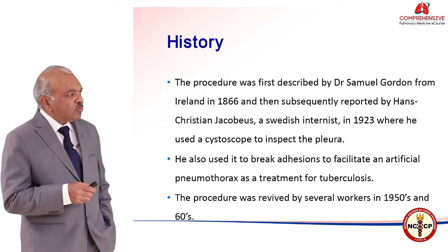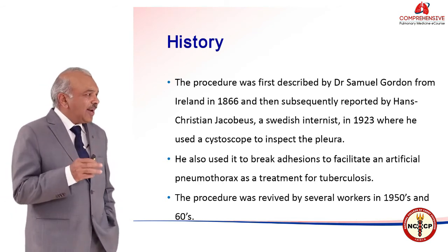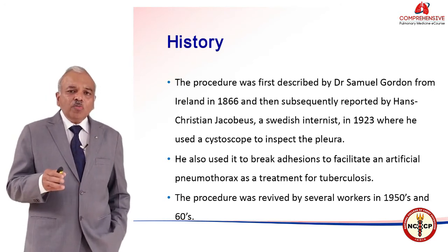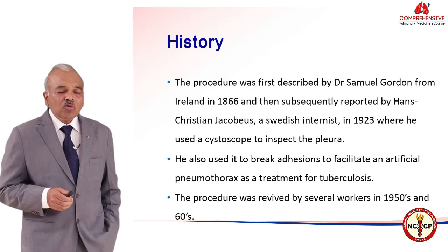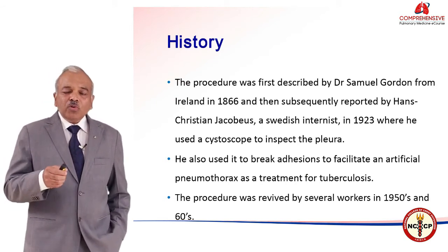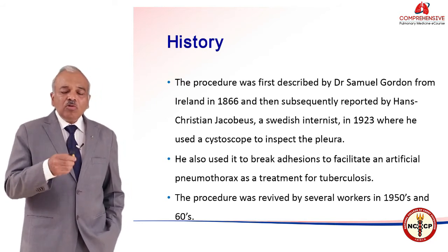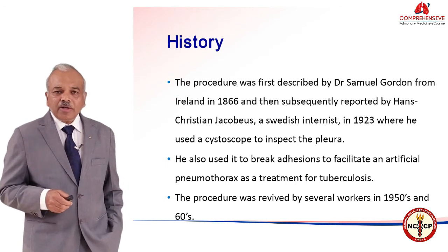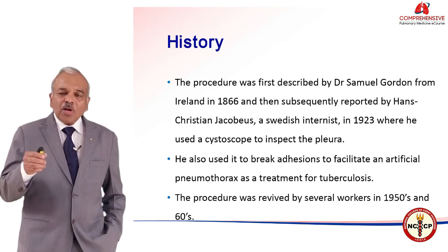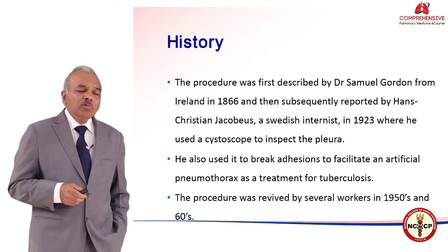The procedure dates back to the year 1866 when Dr. Samuel Gordon in Ireland first did a thoracoscopy. Subsequently, Jacobius, who is considered the father of thoracoscopy and was a Swedish internist, put a cystoscope into the pleural cavity and examined it to look for tubercular lesions. He tried to create an artificial pneumothorax to collapse the lung, as was the want in those days for treatment of tuberculosis.